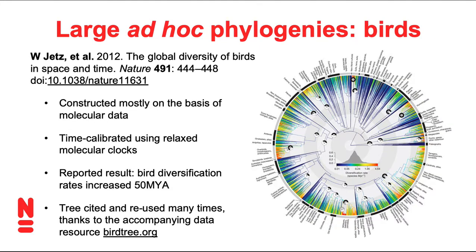Here's another example — a tree for the birds. This tree is quite commonly cited, also because there's a web resource associated with it called BirdTree. This tree is not a supertree; it is based mostly on molecular data calibrated using relaxed molecular clocks. The paper's main story was to show when bird diversification rates changed, which was about 50 million years ago. But this tree is also used for comparative analyses in birds.